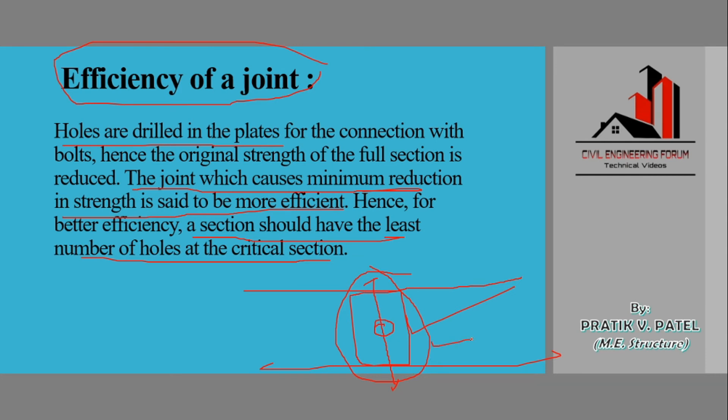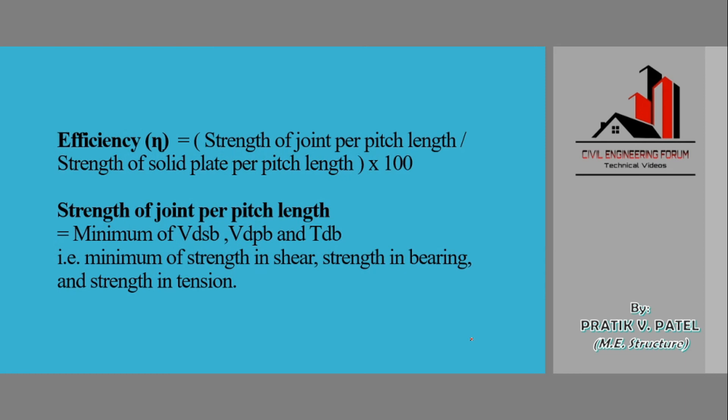But this was just the theoretical part of calculating the efficiency of the joint. But in order to analyze and calculate, we are having the formula: strength of the joint per pitch length divided by strength of solid plate per pitch length. Here pitch length in the sense the distance between the holes, multiplied by 100. That will be our efficiency of that particular joint.